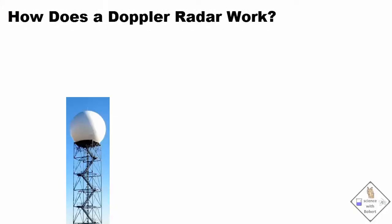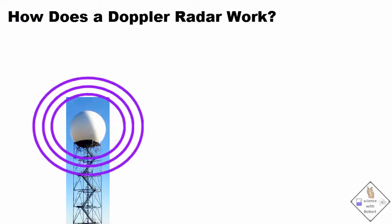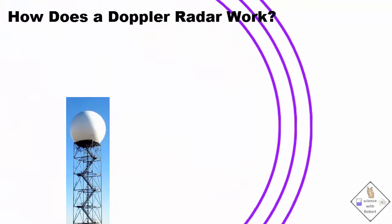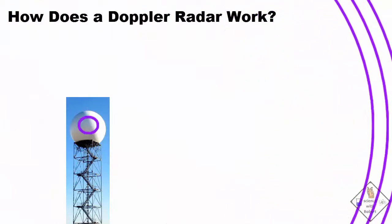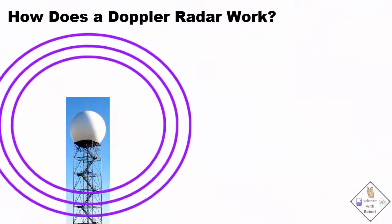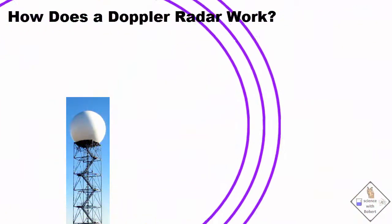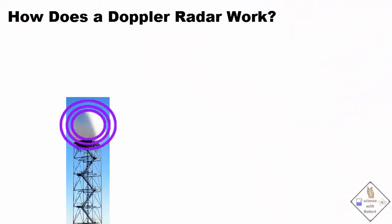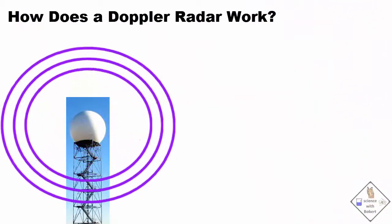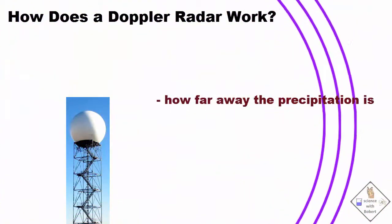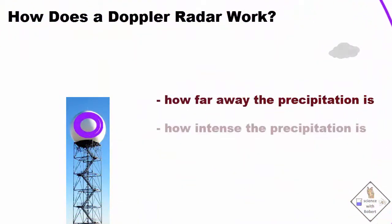This is an animation of how a Doppler radar system works for determining what is going on with our local weather. The information gathered from a Doppler radar system includes how far away precipitation is and how intense.